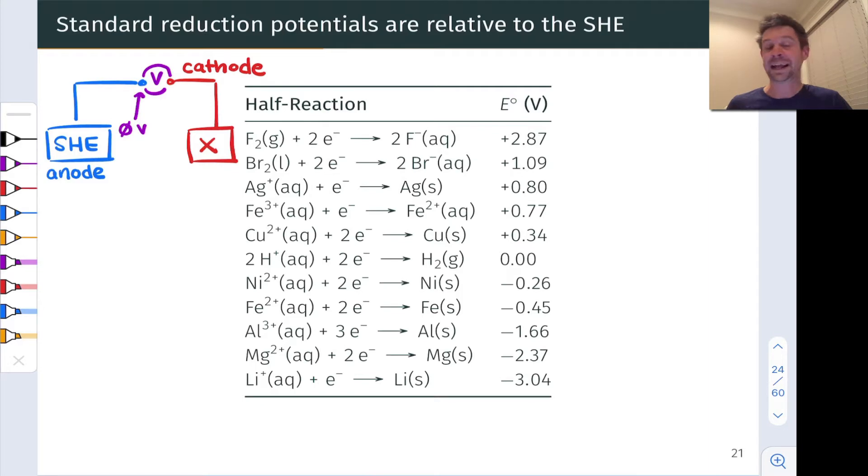We place the negative lead on the SHE side, treating it as the anode and defining that as our zero of voltage, and place our positive lead on the X side, treating the measured voltage as the standard reduction potential.